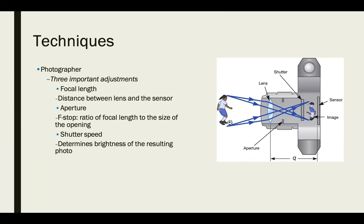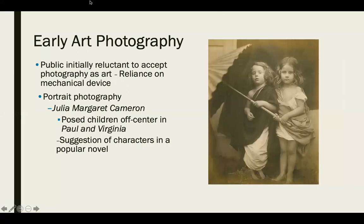The shutter speed determines the brightness of the resulting photo and is one of the most important settings. For example, with a kid playing soccer, you'd want a really fast shutter speed to capture movement without blur. However, if you're shooting at night where there's less light, you'd want a very slow shutter speed so it can capture all available light and make the picture as bright as possible.